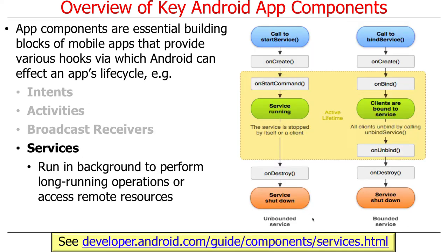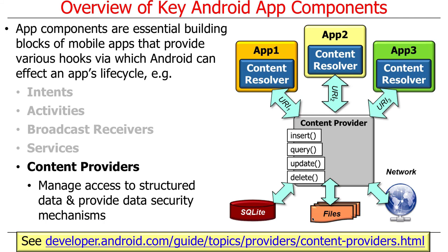Services are basically little mini servers that run in the background and often do long-running tasks or tasks that access remote resources where you don't want to block the user interface. There are a couple of different types of services. Content providers manage access to structured data — if you have to store things like settings, images, profiles, videos, or weather reports that need to last beyond the lifetime of a single activity or user session, you use the content provider to interact with persistent storage like databases, files on your phone, or things cached on the network such as a calendar server, contact server, or email.